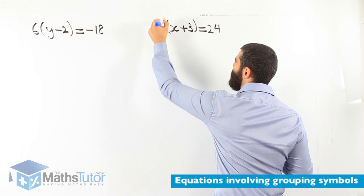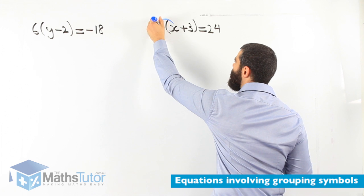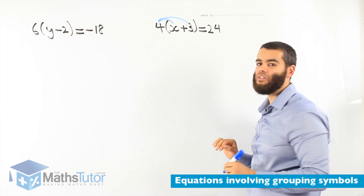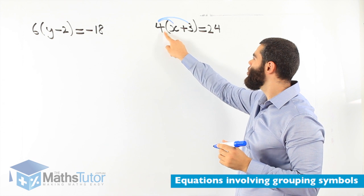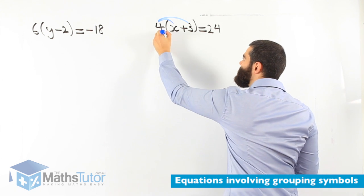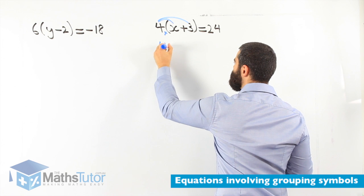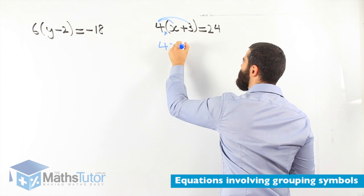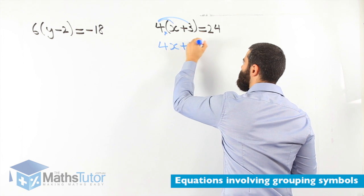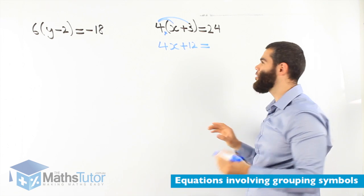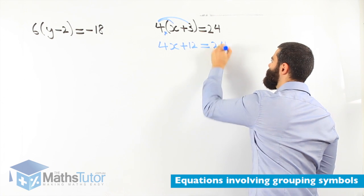How do we expand? We learn in algebra 4 times the x, 4 times the positive 3. We know between the 4 and the bracket is an invisible multiplication sign. So 4 times x, 4 times 3 is 12 equals to 24.